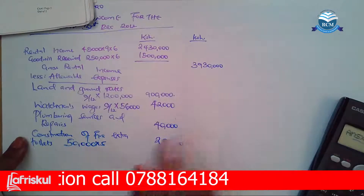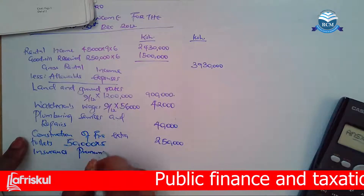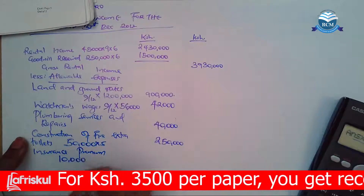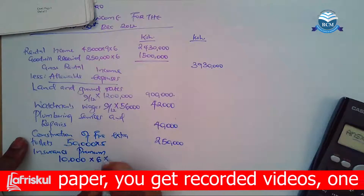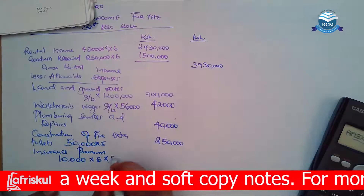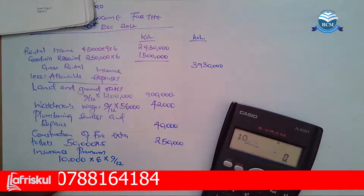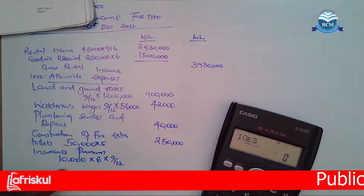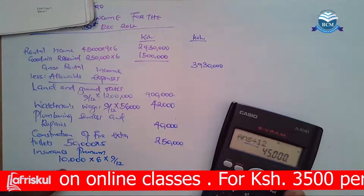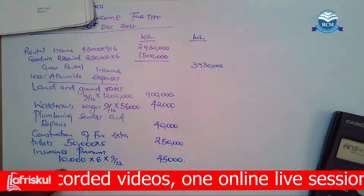Then we have insurance premium amounting to 10,000 per annum for each house. So you take 10,000, multiply by 6 houses, then apportion for the period this insurance is covering this year — only 9 over 12, which is 9 months. So: 10,000 multiplied by 6, apportioned by 9 months, gives 45,000.